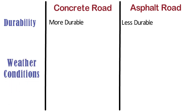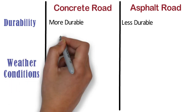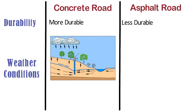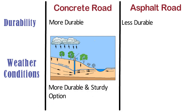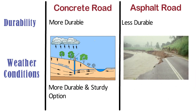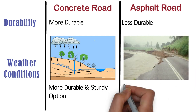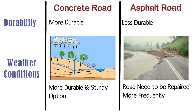Weather conditions. With varying water table levels as well as varying rainfall conditions across the Indian geography, concrete roads emerge as a more durable and sturdy option since asphalt roads are known to get eroded by water. Heavy rain and other extreme weather conditions damage the asphalt road and the road needs to be repaired frequently.